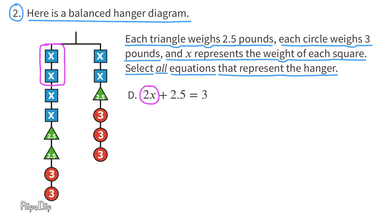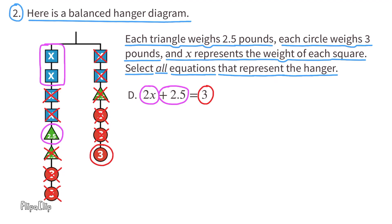Equation D: There are 2x's on the left that match the equation, but we still have 2 more x's on the hanger. If I cancel 2x from the left side, I must remove 2x from the right side to keep it balanced. There's also an extra triangle (2.5) that must be removed from both sides. With no terms left on the left side of the equation, I cross out two red circles from the left side of the hanger and two from the right side. The only remaining value on the right side of the hanger is one red circle worth 3, and the right side of Equation D shows 3 — so yes, Equation D matches the hanger.